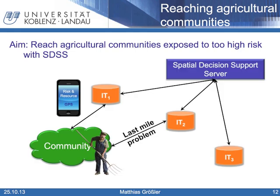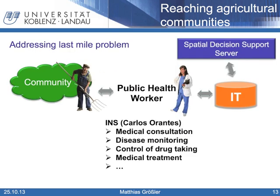This slide visualizes a possible setup for the information channel. Regional IT services are linked to a central spatial decision support server. The regional IT services can then be accessed by agricultural communities via mobile devices by those who have the necessary equipment. Other agricultural communities face the last mile problem and therefore use the information channel via a connecting person. A public health worker contacting people directly in the agricultural communities closes the last mile of the chain. In El Salvador, the INS could perform this task. A public health worker is able to perform medical consultation, disease monitoring, control of drug taking, and partially also medical treatments.